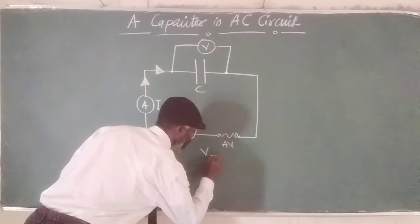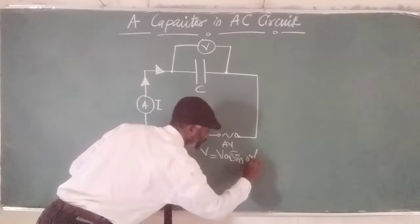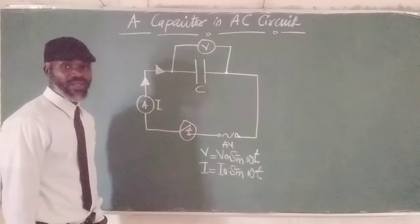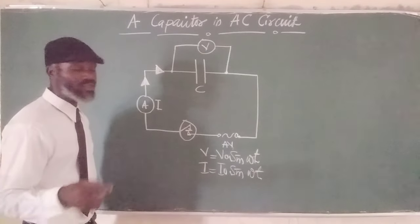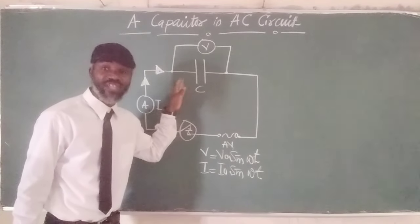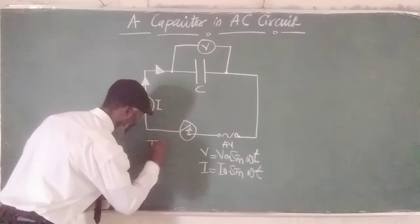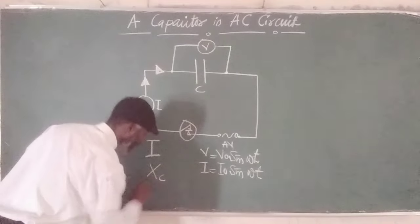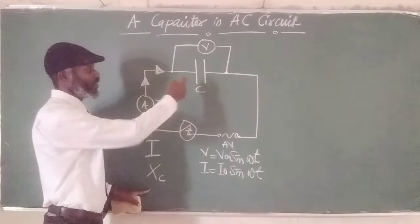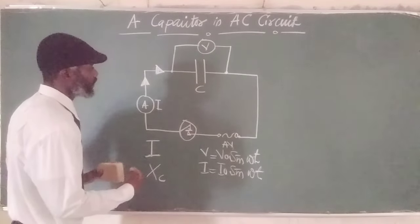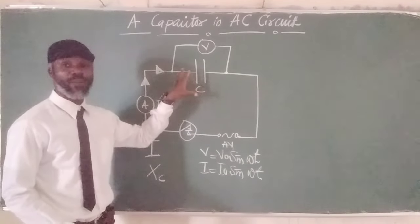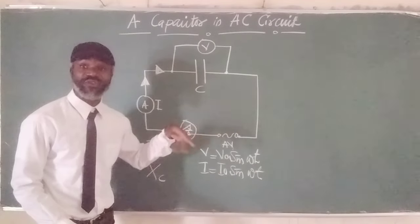If that is the case, we have V equal to V-naught sine omega t, and this will produce I equal to I-naught sine omega t. We're going to check the behavior of a capacitor when it is connected in AC circuits. We're going to check various parameters: the current I, the capacitive reactance Xc, the current flowing in the circuit, the capacitive reactance of the capacitor. When current flows into the capacitor, certain characteristics are triggered.